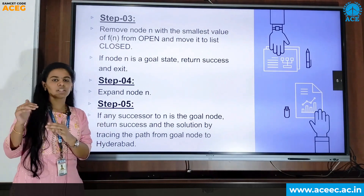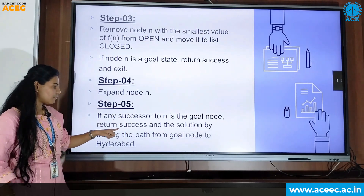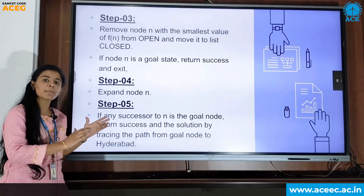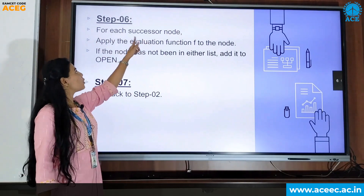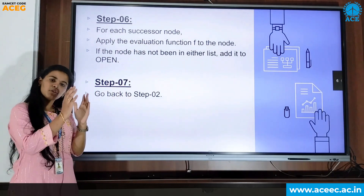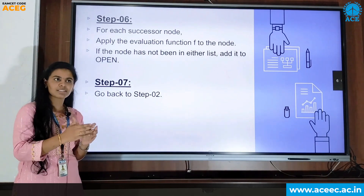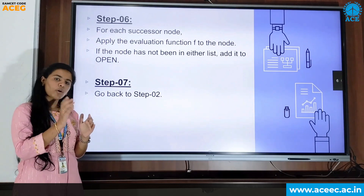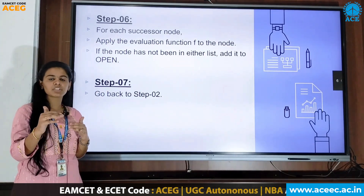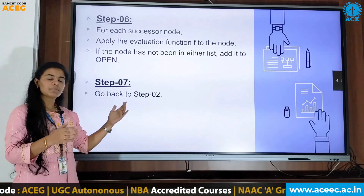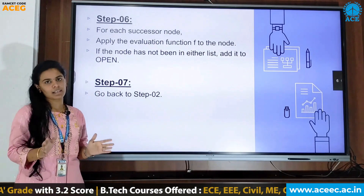If the traversal node is the goal node, we return success. If not, we continue traversing and expanding the nodes. If any successor is the goal node, we return success and show the path through which the nodes are traversed. If not, we traverse to the next nodes. For each successor node, we apply the same evaluation formula. The shortest path is calculated using the heuristic values as well as the path cost. If all steps are completed and we reach the goal node, we return success; otherwise, we return failure.